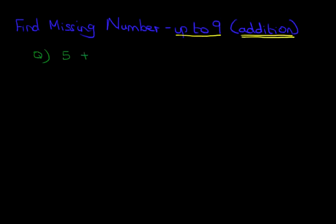5 plus something equals 8. So 5 plus something equals 8. Now as we've said in an earlier tutorial, there is more than one way to do this. Let's begin with the dot method.